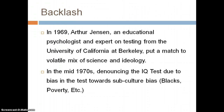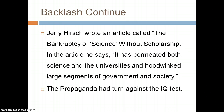The backlash. Arthur Jensen, an expert on testing from the University of California at Berkeley, took the idea and challenged it with many articles. In the mid-1970s, he denounced the IQ test due to its bias towards subgroups including blacks, people in poverty, Asians, Native Americans, and whites. Jerry wrote an article called 'The Bankruptcy of Science Without Scholarship,' in which he said that IQ testing had permitted both science and universities to allow hokum to pervade large segments of government and society.